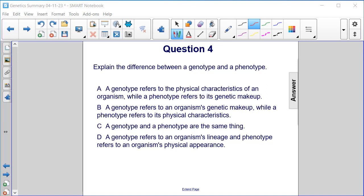Explain the difference between a genotype and a phenotype. A genotype refers to the physical characteristics of an organism, while the phenotype refers to its genetic makeup. A genotype refers to an organism's genetic makeup, while a phenotype refers to its physical characteristics.